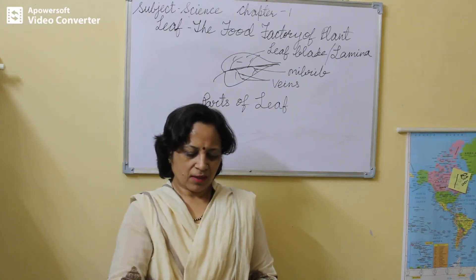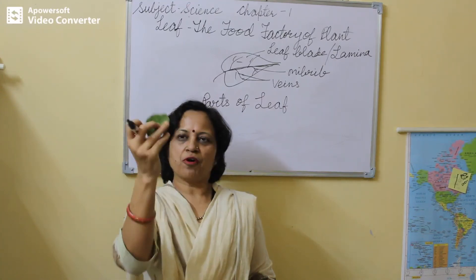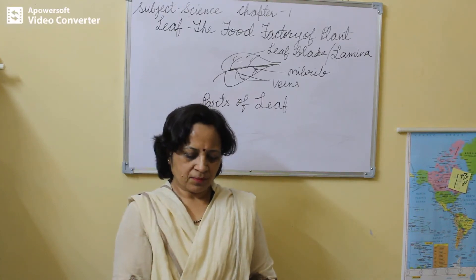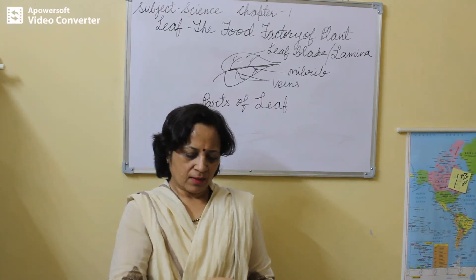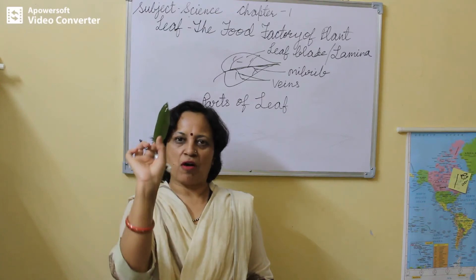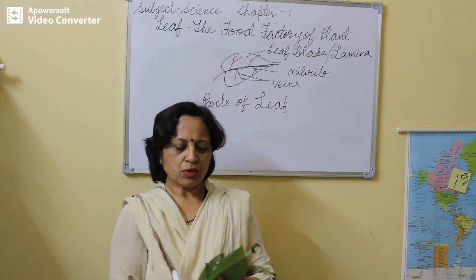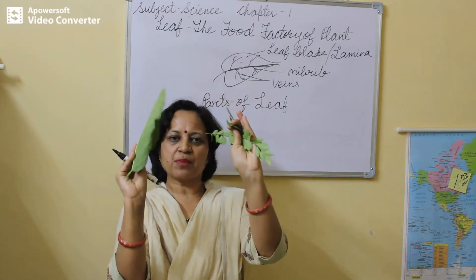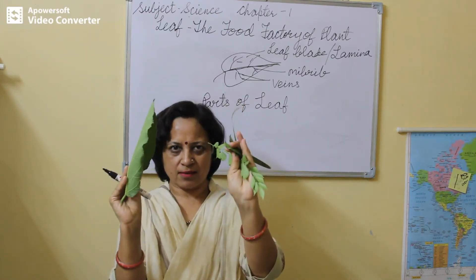This is the leaf of a show plant. And this is the leaf of guava. So the leaves are of different shapes and sizes.